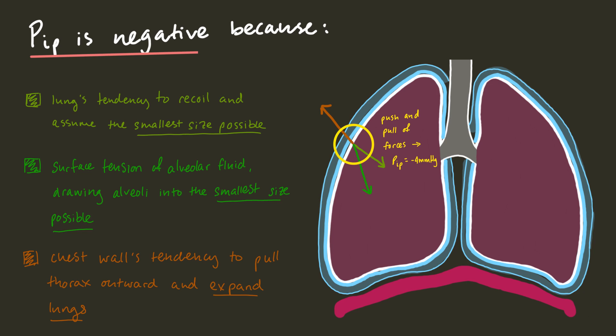The intrapleural pressure is negative due to the interaction between 3 naturally occurring forces. Number 1, the lungs' tendency to recoil and assume the smallest size possible. Number 2, the surface tension of alveolar fluid, which draws alveoli into the smallest dimensions possible. And number 3, the chest wall's tendency to pull the thorax outward and expand the lungs, opposing the first 2 forces. None of these forces really win over each other, because there is very strong adhesion between the two layers of the pleura — they're really stuck together, thanks to the surface tension in the pleural fluid. It's the combination of these forces, their push and pull, that generates the negative intrapleural pressure.